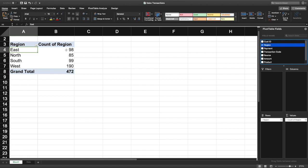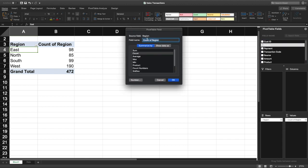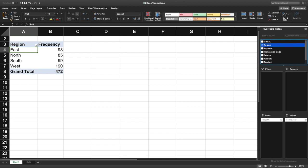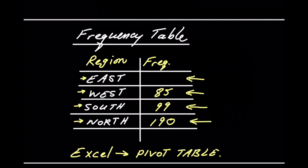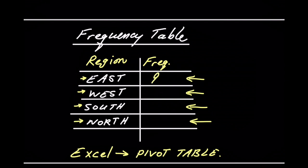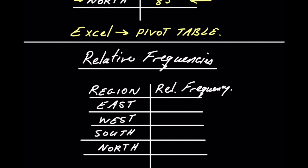As you can see, it has counted 98 transactions from the east, 85 from the north, and so on. If I right-click and go to field settings, I can give this a better name — let's call it 'frequency'. So: east is 98, west is 190, south is 99, and north is 85.